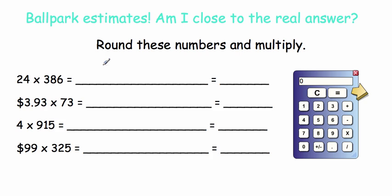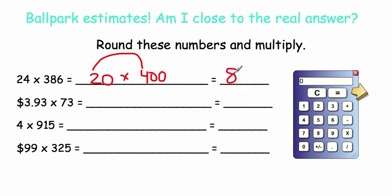Ballpark estimates are just another way of estimating — something you'll use more in math class. For these problems, round the numbers and multiply. For 24 times 386: 24 is close to 20, and 386 is close to 400. So we do 20 times 400. The shortcut is 2 times 4 equals 8, then add three zeros — so eight thousand. For $3.93 times 73: round to $4 times 70. Four times seven is 28, add one zero — about $280.